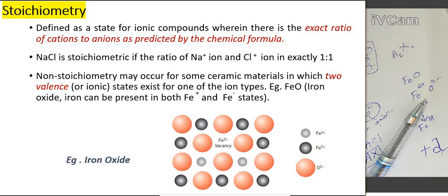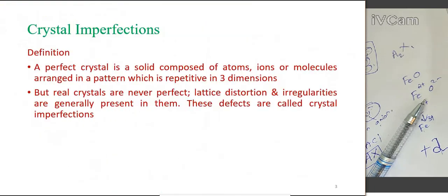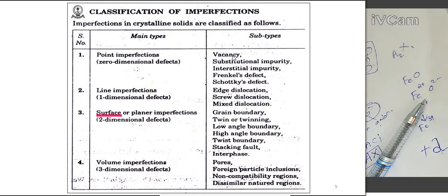These are the zero-dimensional point defects — vacancy, substitutional impurity where the impurity replaces the base metal atom at the lattice point, interstitial impurity where the atom occupies an interstitial point, and Frenkel and Schottky defects in ceramic materials. In the next lecture, we will discuss about the other three types of defects. Thank you.